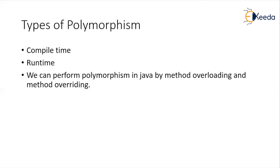These are also termed as static binding and dynamic binding. We can perform this polymorphism in Java by using method overloading and method overriding concepts. Method overloading is the way of implementing compile time polymorphism, and method overriding is the way of implementing runtime polymorphism, which we will be discussing in upcoming sessions.